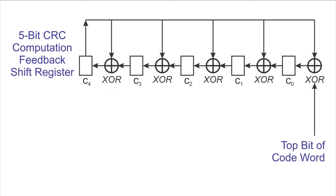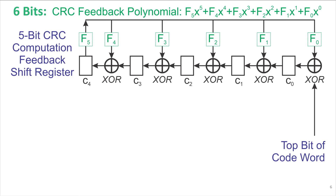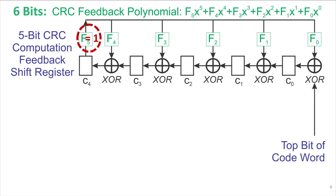Rather than using long division, this approach uses a hardware configuration. The feedback polynomial, which is the divisor for the division, is represented by the f boxes — f5 through f0. Generically, the feedback polynomial is f5·x to the 5th plus f4·x to the 4th and so on down to f0·x to the 0. This way, any feedback polynomial can be specified. However, the useful ones all have a 1 in the top bit because otherwise the hardware won't actually do anything useful.